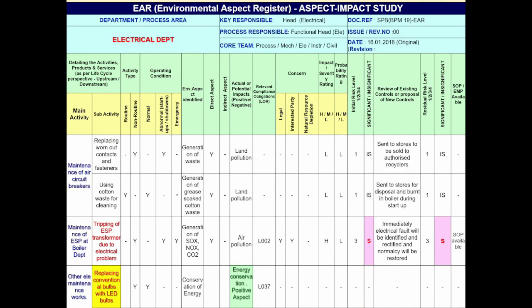This is a sample EAR format for the electrical department. In the third row under sub-activities, given the dripping of ESP transformers due to electric fault. Since this comes under legal and interested party concern, the impact severity is high. This aspect is considered significant. In the next bottom-most row, the sub-activity is shown as replacing conventional bulbs with LED bulbs, shown with the yellow color background. Since this leads to energy saving, the actual impact is given as energy conservation, which is considered a positive aspect.